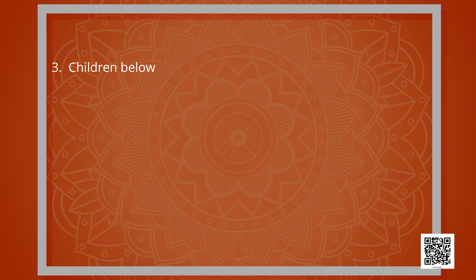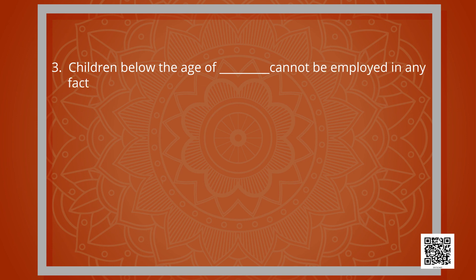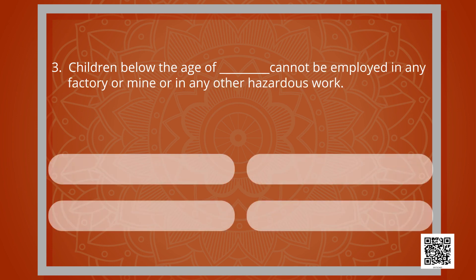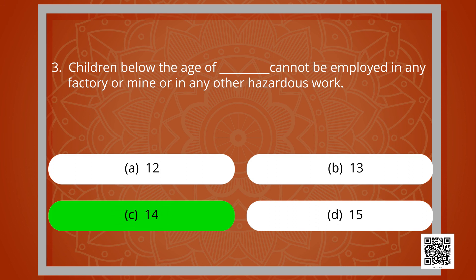Next question: children below the age of how many years cannot be employed in any factory, mine, or other hazardous work — 12, 13, 14, or 15? The correct answer is option C: 14.